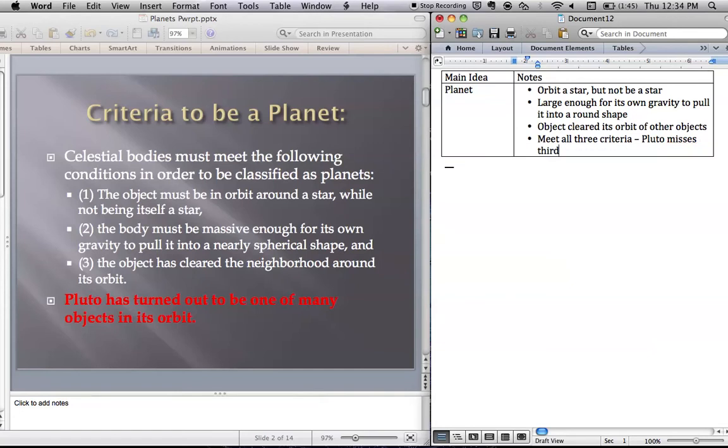There are other objects that share Pluto's orbit with it. So it's not the only thing in its orbit on its path around the Sun. The Earth is the only thing on its path. Even though we have our Moon, the Moon orbits us so it can't be considered a planet because the Moon isn't orbiting a star. It's orbiting another planet. So those are the rules to be a planet.